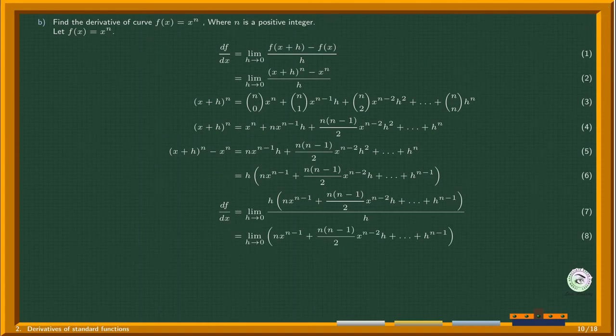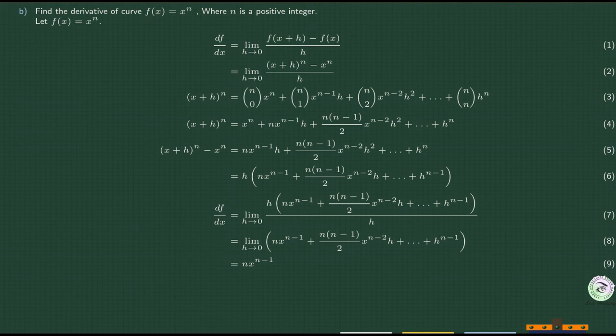x and n are not affected by h going to 0, but terms with h go to 0. Therefore, taking the limit, we get n times x^(n-1).